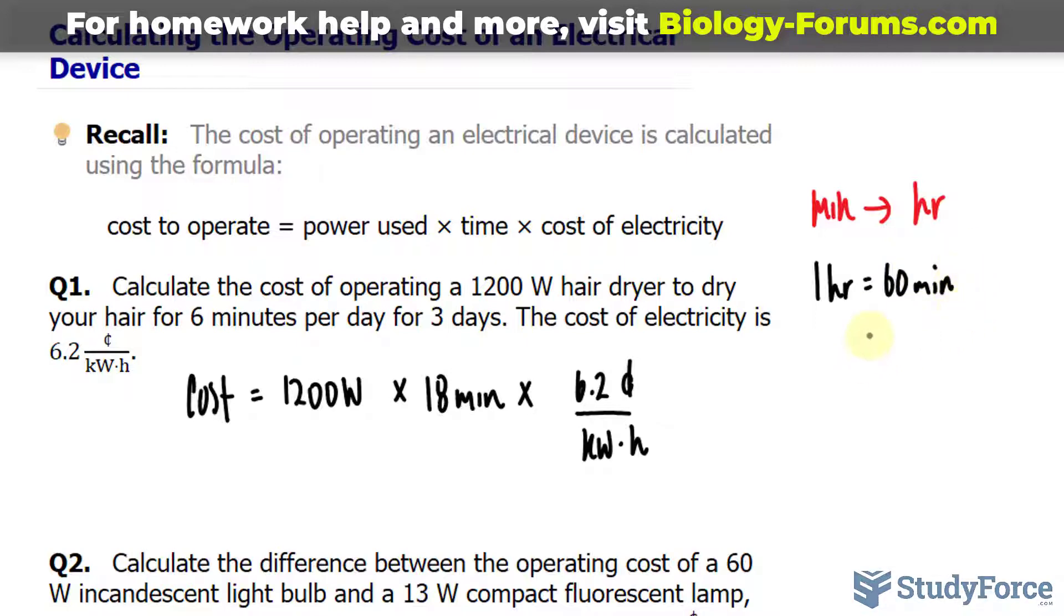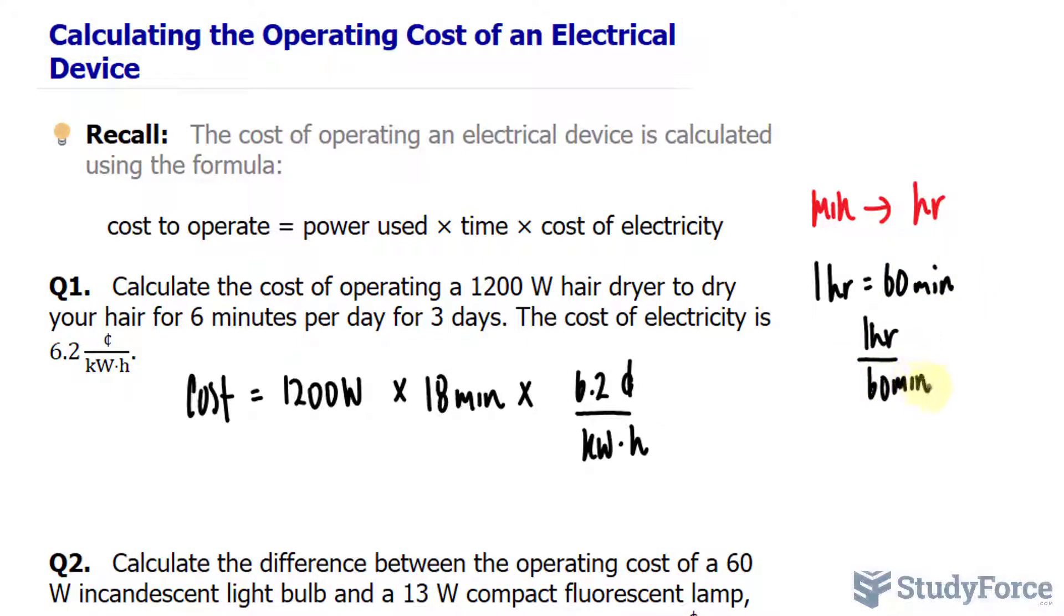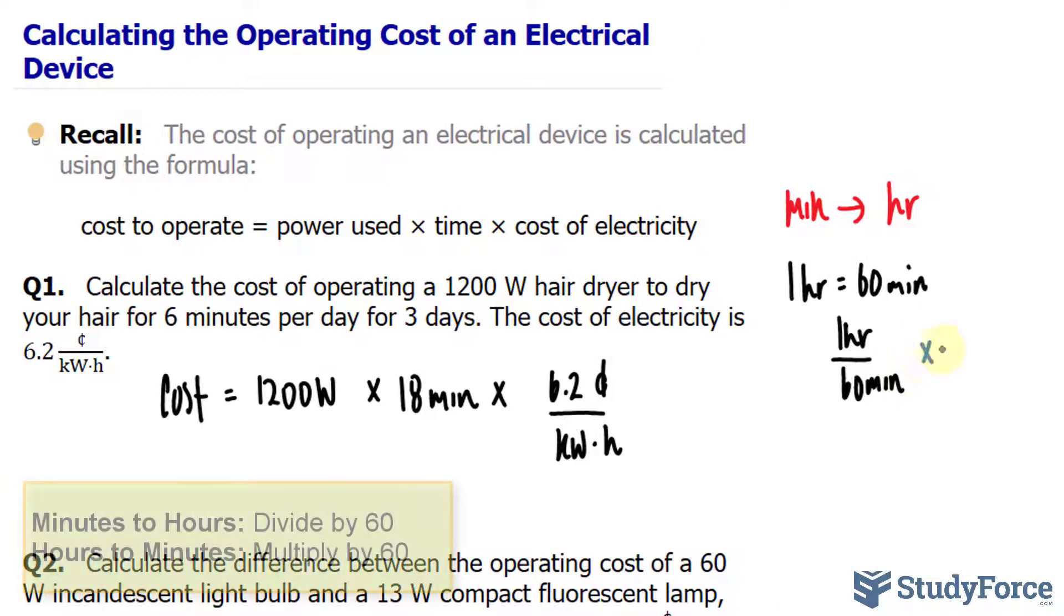You can write it down as one hour per every 60 minutes, or you can write it down as 60 minutes per every one hour. But I'll leave it like this and multiply that to 18 minutes.